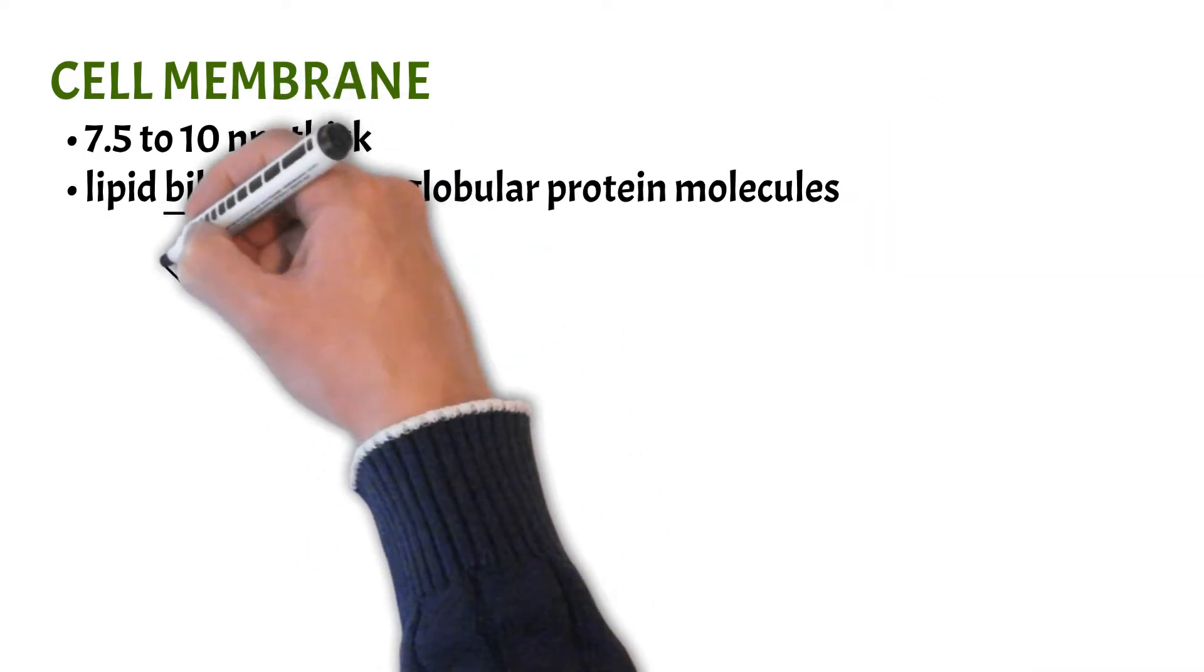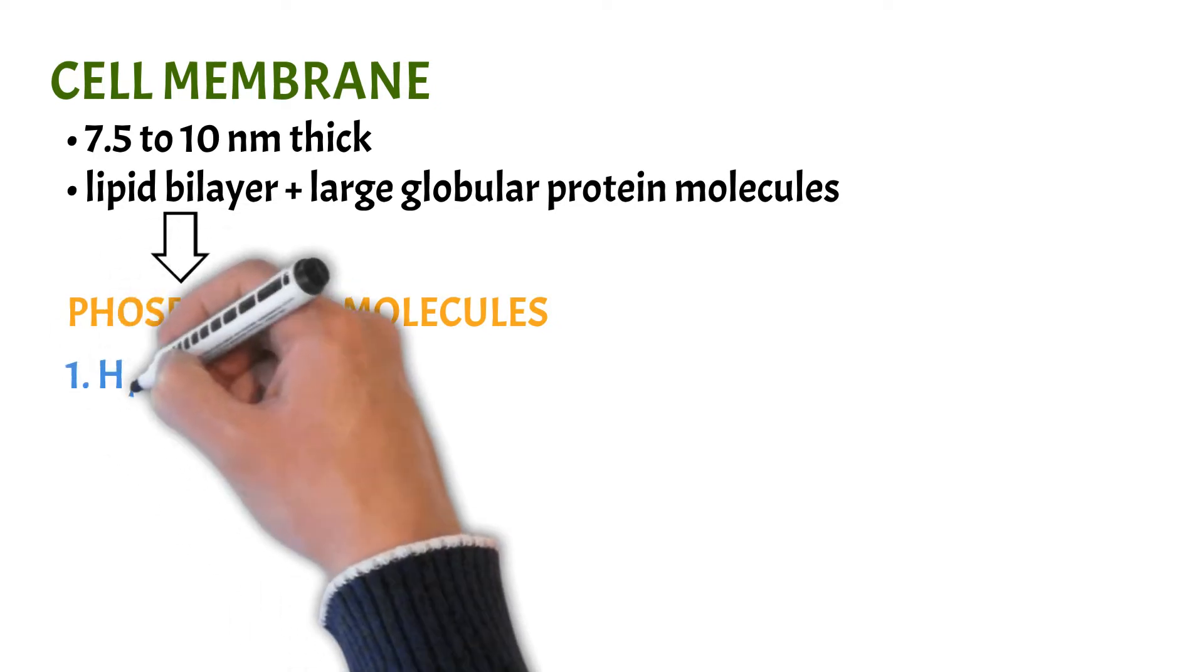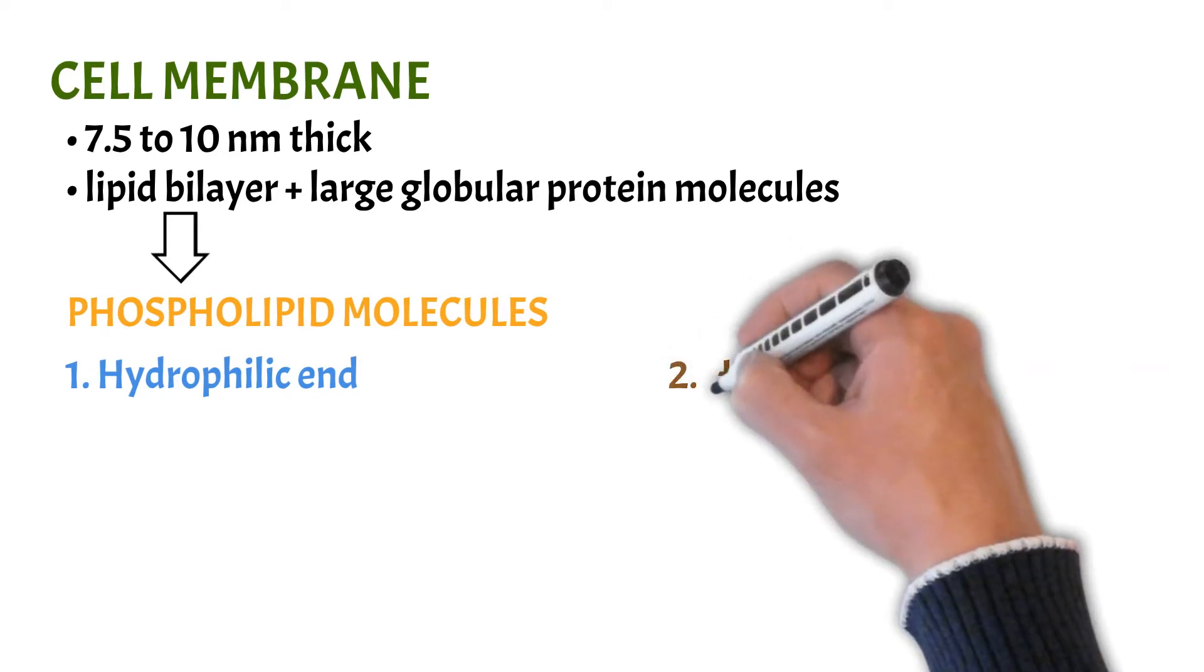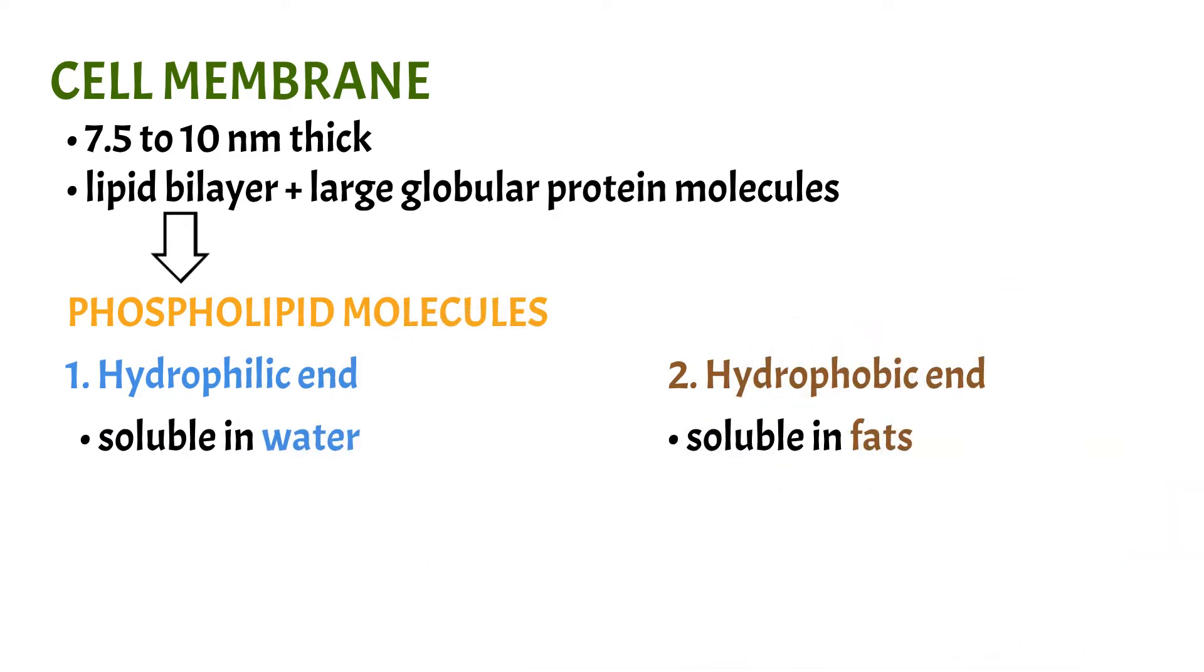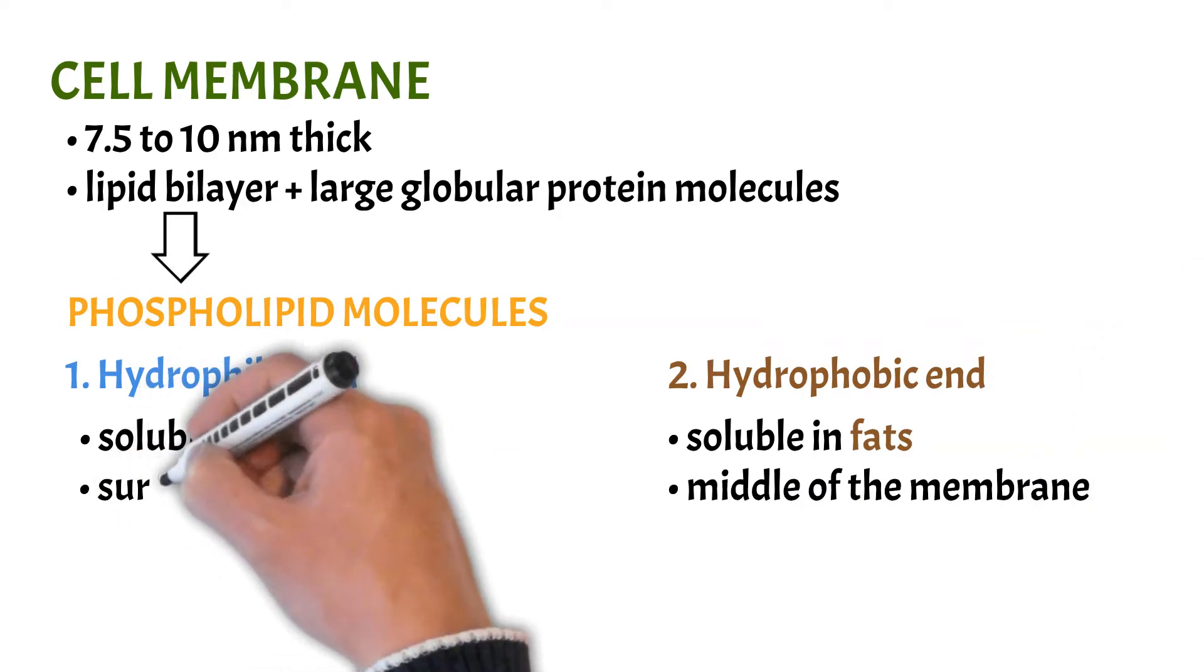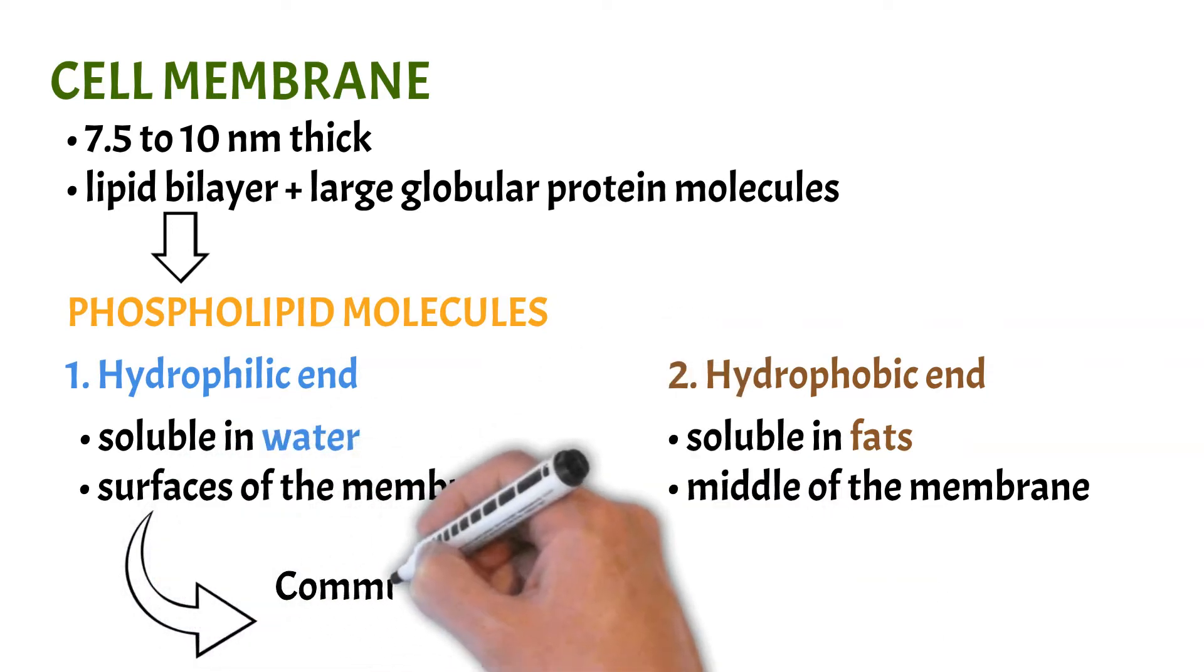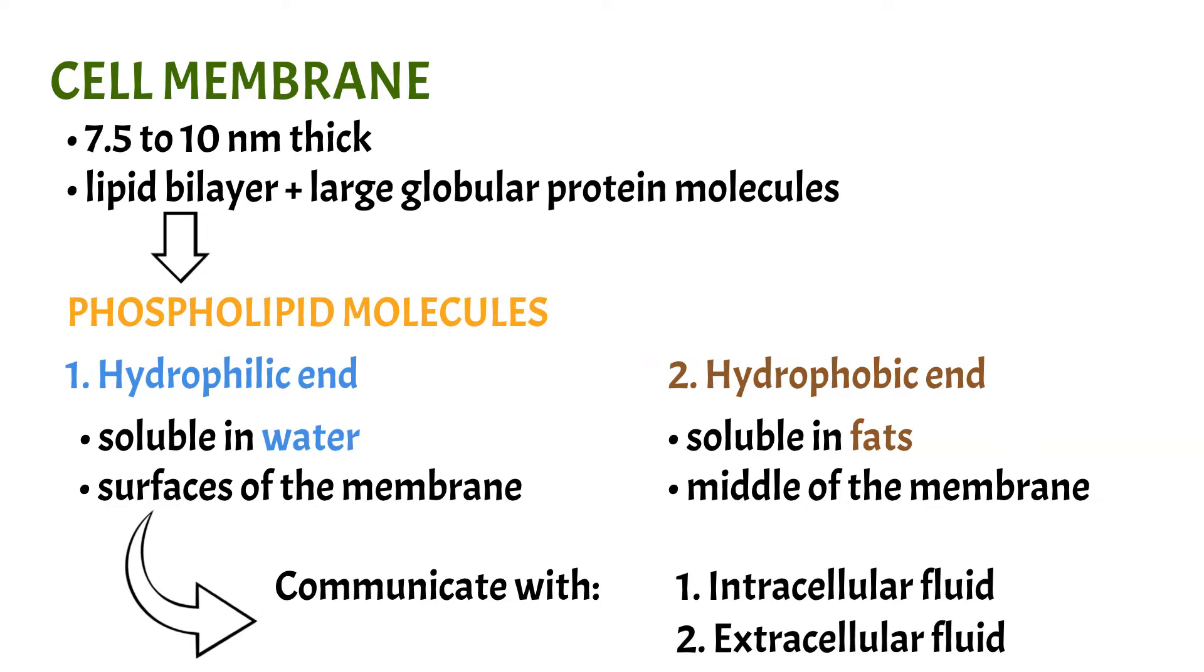This bilayer is composed of phospholipid molecules that have two ends. One end is soluble in water and this one is called hydrophilic. The other one is soluble only in fats and it is called hydrophobic. The hydrophobic portions tend to attach to one another in the middle of the membrane whereas the hydrophilic portions form the two surfaces of the complete cell membrane. One is in contact with the intracellular fluid on the inside of the membrane and the other with the extracellular fluid on the outside surface.